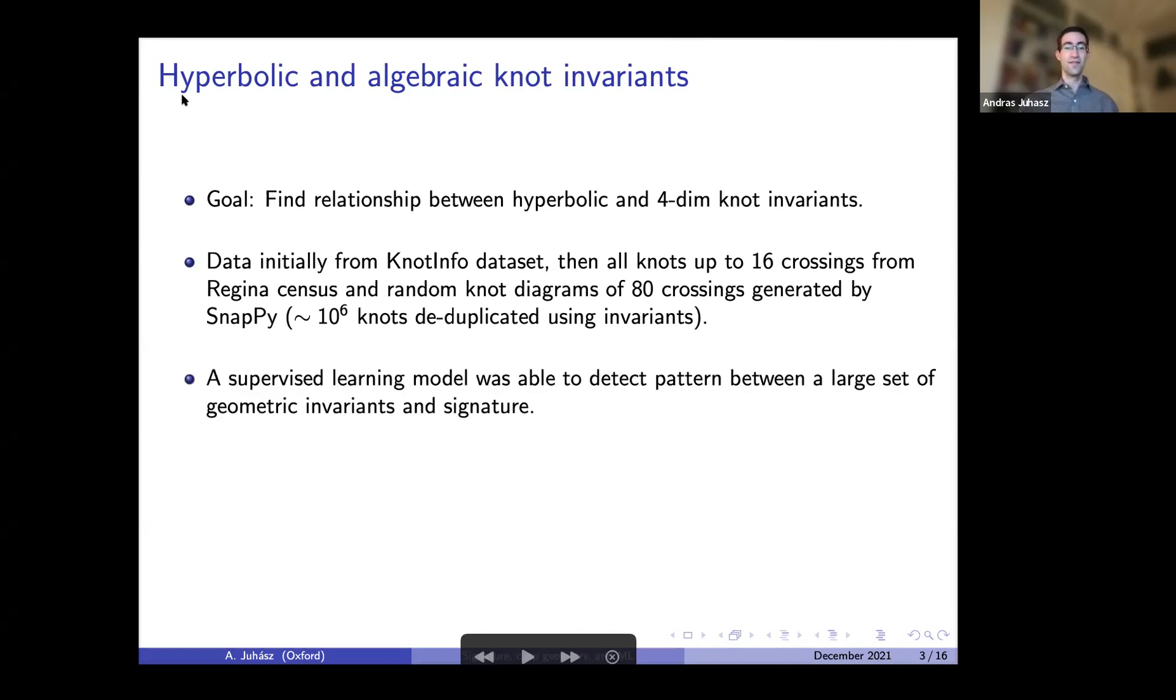What we used was a supervised learning model to detect patterns between a large set of geometric invariants and the signature. Supervised learning means you have a data set, you want to predict maybe B from A, and so basically you are trying to approximate a function. The simplest example would be linear regression, where you're trying to fit a line, but there are more advanced models going up to neural networks where you have highly non-linear things that you are trying to fit on your data. You take part of your data where you can test how good your approximation is.